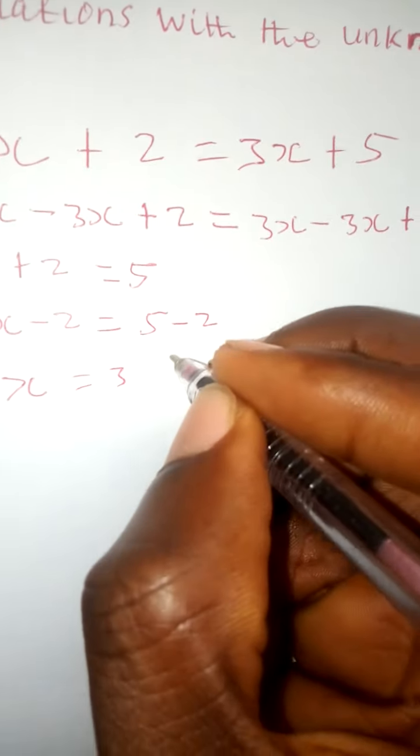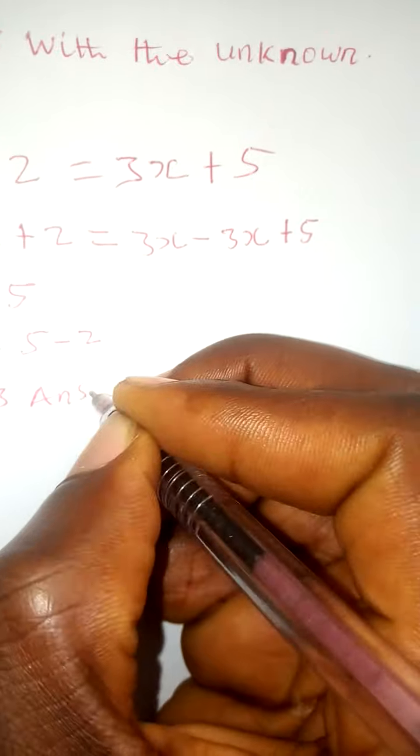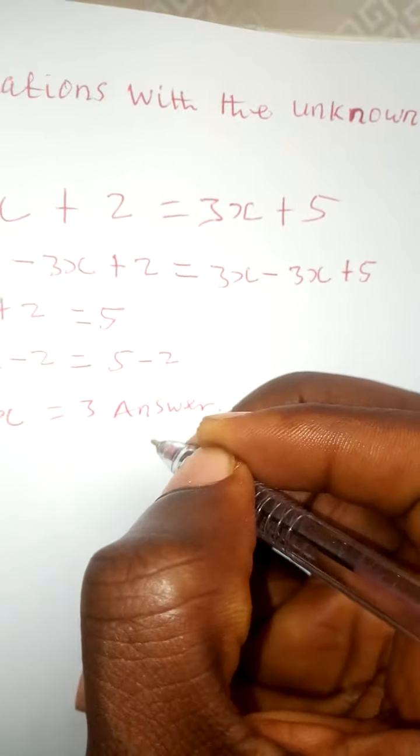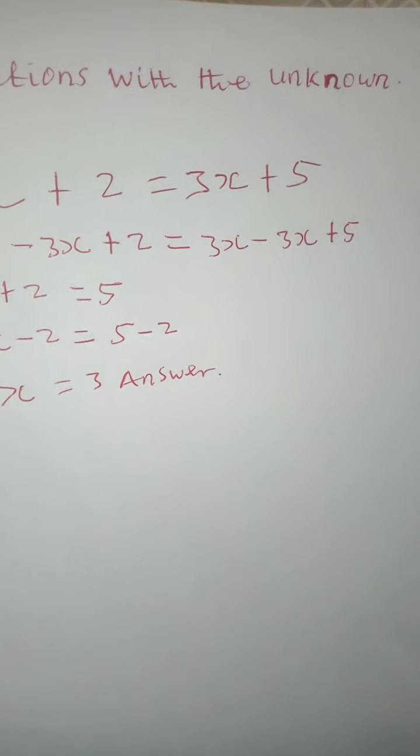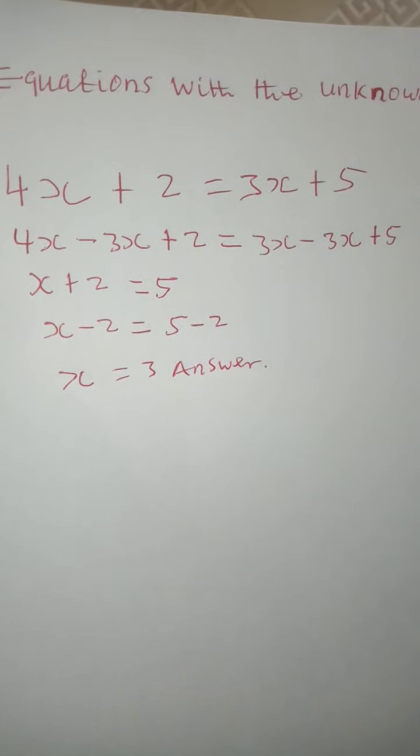So x will be 3, and this will be our answer. x equals 3. This is when we have the unknown on both sides of the equation.